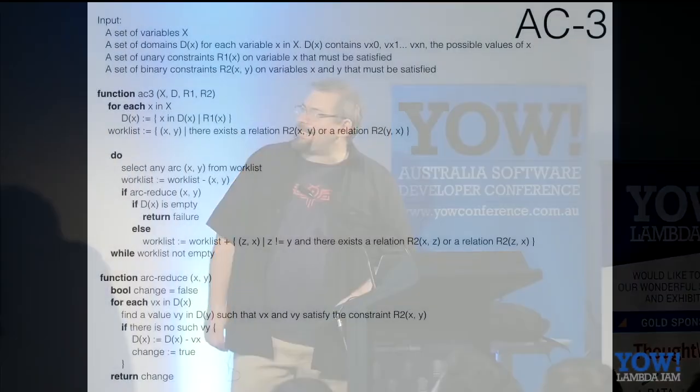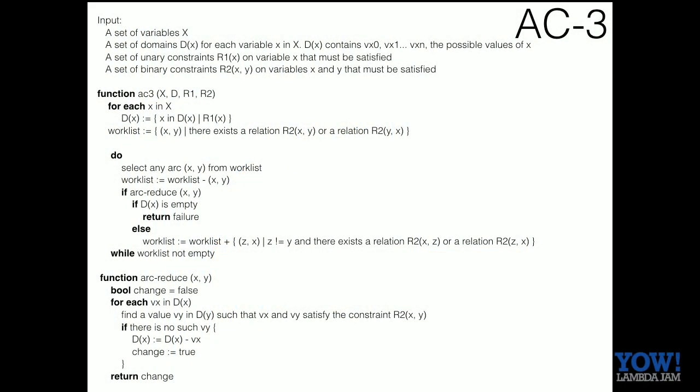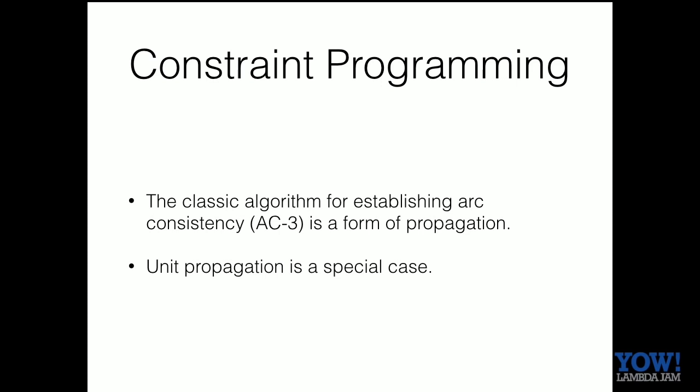There's a classic algorithm called AC3 from the 70s which is the thing usually taught for constraint programming. If you work it out, it's exactly the propagator solution: we have a queue of propagators we're working with, set up our initial conditions for all the unary relations, and then pump the propagator queue. So you can read the propagator algorithm from the 70s. Unit propagation was a special case.